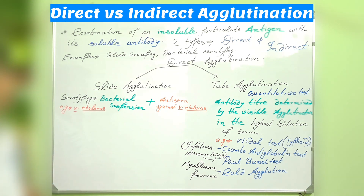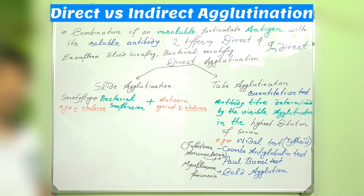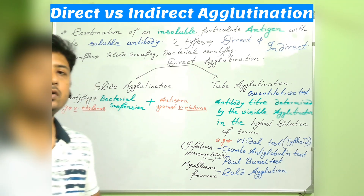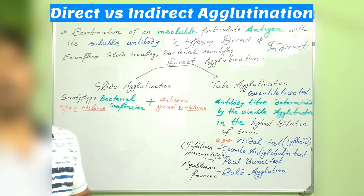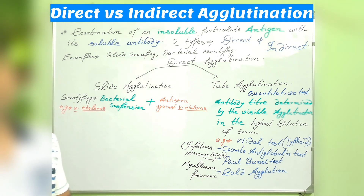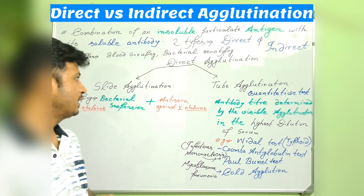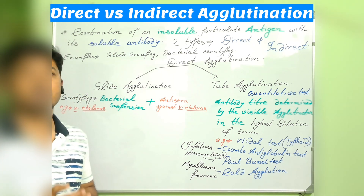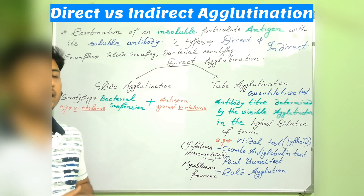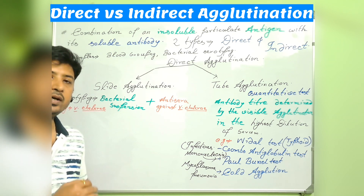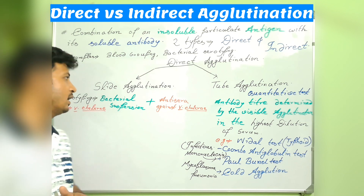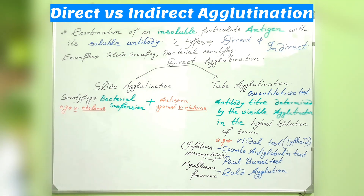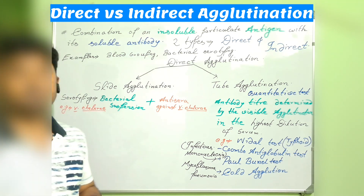The direct agglutination process is of two types: slide agglutination and tube agglutination. In the slide agglutination process, it can be used for blood grouping, cross matching, and other serotyping processes, where a bacterial suspension is directly employed on a clean, grease-free glass slide and antisera is applied against the particular bacteria — for example, E. coli.